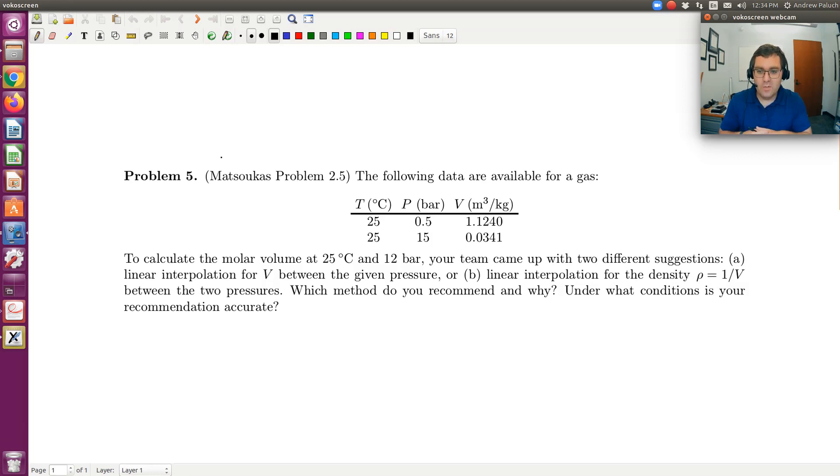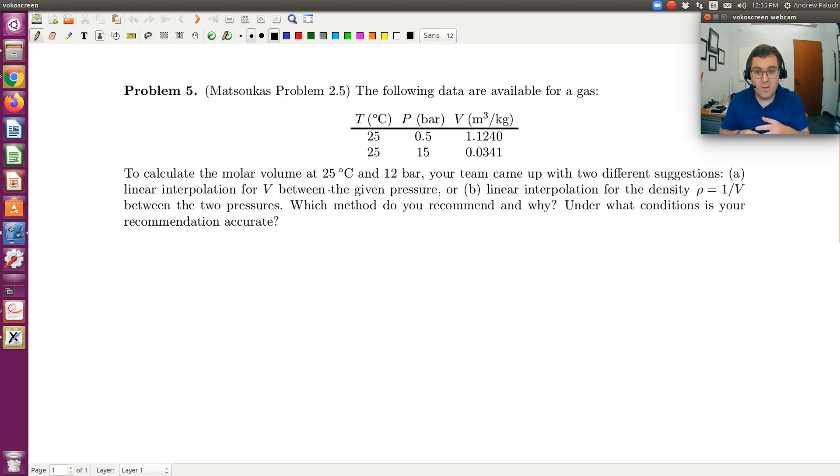linear interpolation for V between the given pressure, or B, linear interpolation for the density, rho equals 1 over V between the two pressures. Which method do you recommend and why? Under what conditions is your recommendation accurate?